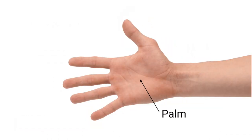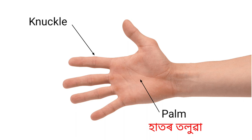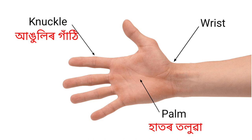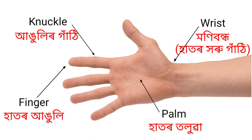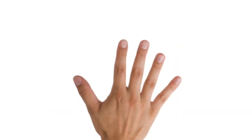Palm — that means Haatar Tollua. Knuckle — that means Angulir Gathii. Wrist — that means Monibandha. Finger — that means Haatar Anguli. Nail — that means Knock.